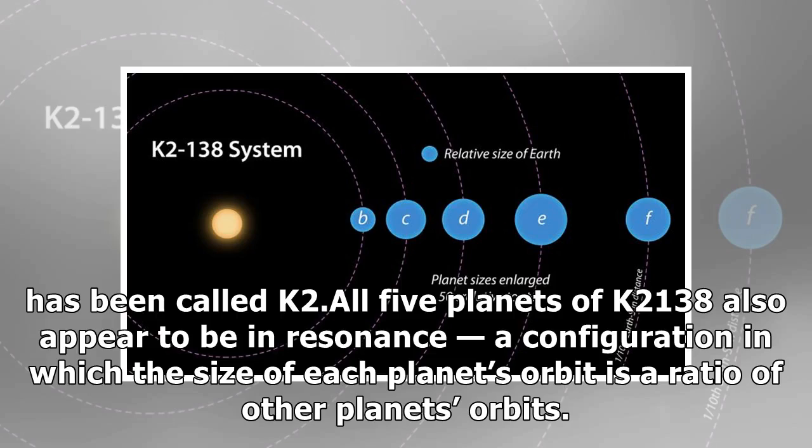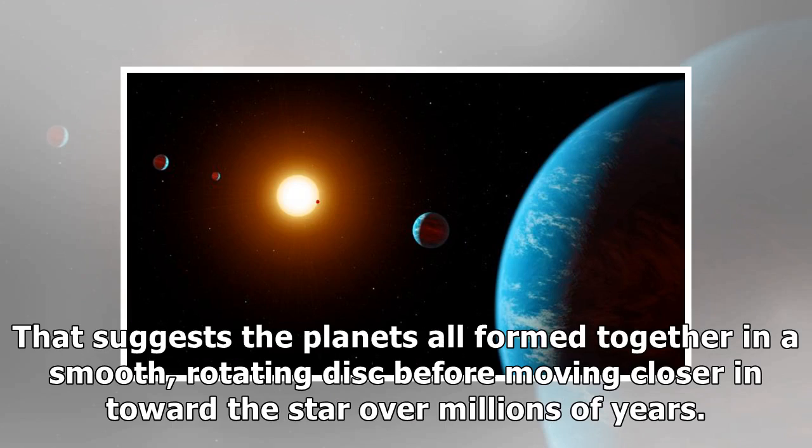All five planets of K2-138 also appear to be in resonance, a configuration in which the size of each planet's orbit is a ratio of other planets' orbits that suggest the planets all formed together in a smooth, rotating disk before moving closer in toward the star over millions of years.